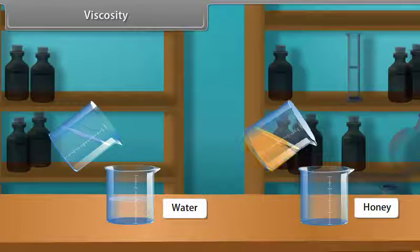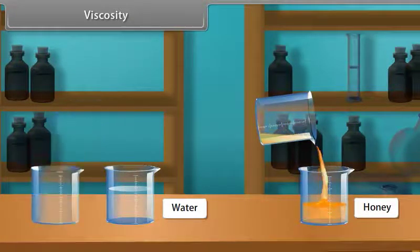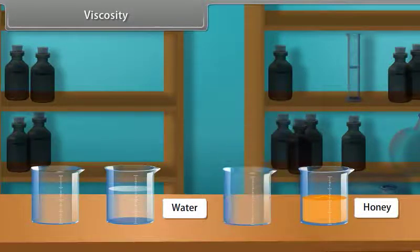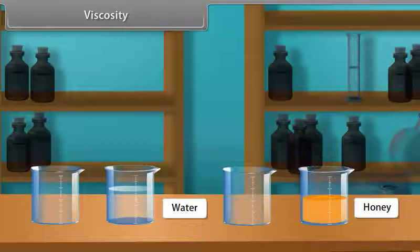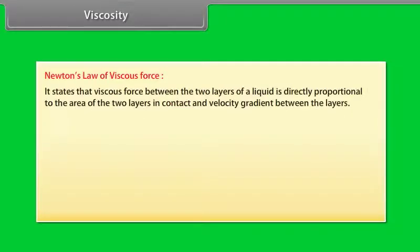Viscosity. It is defined as the property of a liquid by virtue of which an internal resistance comes into play which tries to destroy the relative motion between the layers. This internal resistance acts tangentially on the layers of the liquid. Newton's law of viscous force states that viscous force between the two layers of a liquid is directly proportional to the area of the two layers in contact and velocity gradient between the layers.